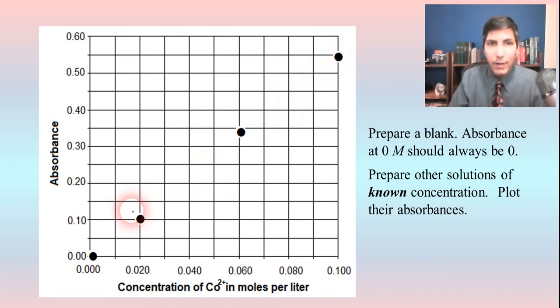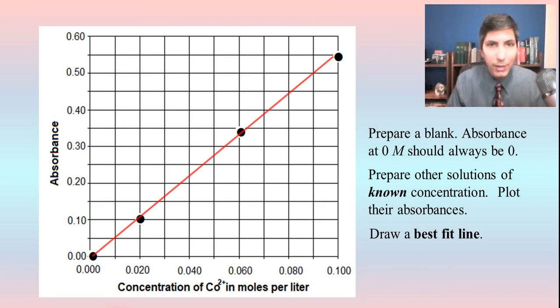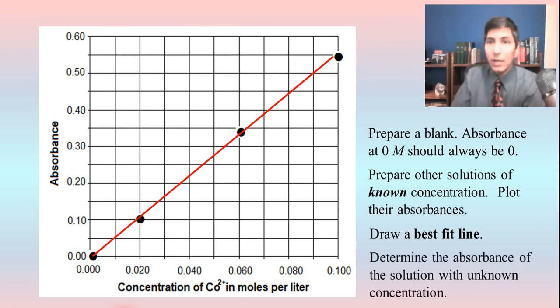And as you can see, it looks like they're forming a fairly straight line. Now, they won't always make a line that's quite that pretty. Sometimes you'll have to estimate the best fit line, and you'll have to draw that. And so, we can draw it pretty much a straight line in this case. And once we have the best fit line, well, now we can determine the absorbance of a solution with unknown concentration.